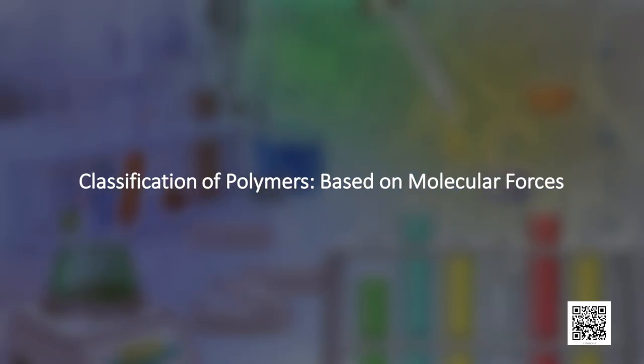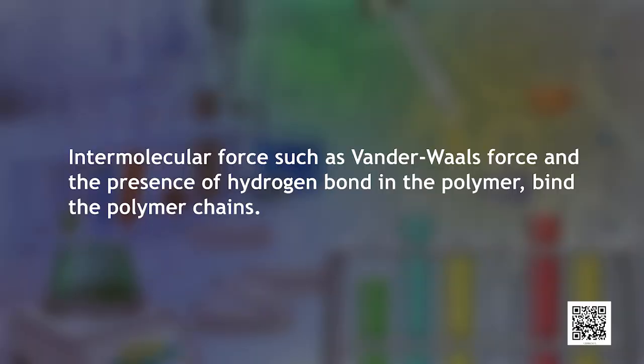The fourth type of classification is based on molecular forces present in the polymer. A large number of polymer applications depend on their unique mechanical properties, which are governed by intermolecular forces such as van der Waals forces and hydrogen bonds present in the polymer. These forces also bind the polymer chains. Based on the magnitude of these forces, polymers can be classified into four subgroups: elastomers, fibers, thermoplastic, and thermosetting polymers.